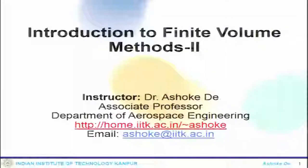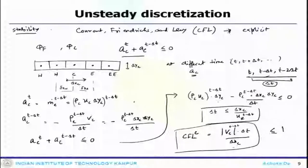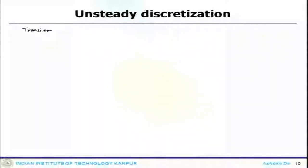Welcome back to the lecture series on Finite Volume Methods, where we will continue our discussion from the last lecture. Now, what happens in the transient diffusion case? We look at the transient diffusion problem. For this purpose, again consider a one-dimensional stencil.